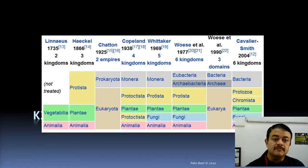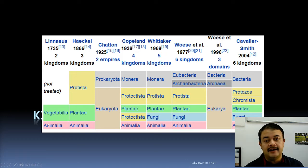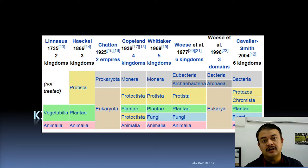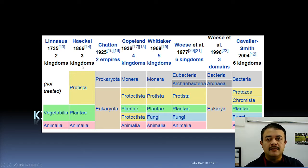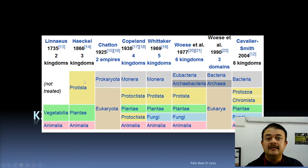Looking at the history of classification systems, it all started with Linnaeus — Carl Linnaeus, the Swedish father of taxonomy. For him, there were only two kingdoms: Vegetabilia and Animalia. He didn't know about microbes. Although Antoine van Leeuwenhoek preceded Linnaeus, Linnaeus didn't formally treat bacteria in his classification. Then came Haeckel in 1866 with three kingdoms: Protista, Plantae, and Animalia.